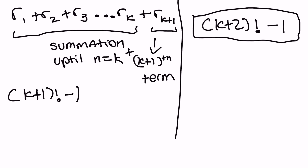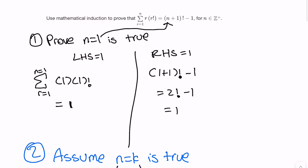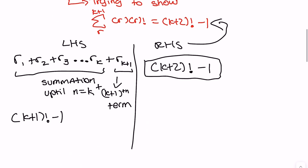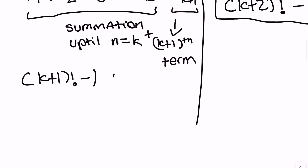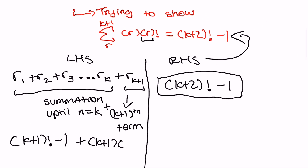Now here's another mistake a lot of people make — they usually plug k plus one into the factorial index of the main formula, but no. Because this is the term that you're summing up, you're trying to find the k plus one term. So you do k plus one times k plus one factorial, since from our sigma function the term is r times r factorial.